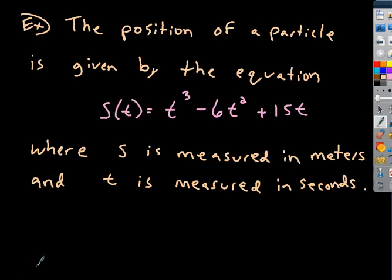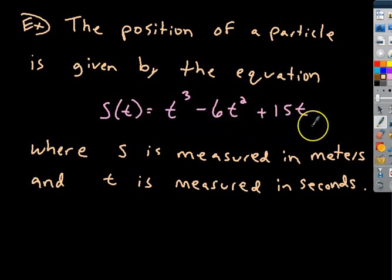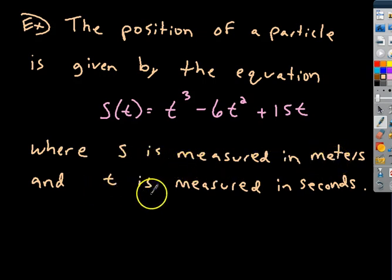Let's use this information. The position of a particle is given by the equation S(T) = T³ − 6T² + 15T, where S is measured in meters and T is measured in seconds. Pause the video and write this down, because we'll need this space to start answering questions.